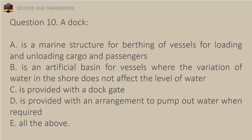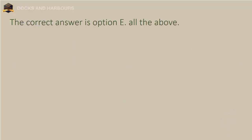Question 10. A dock: A. Is a marine structure for berthing of vessels for loading and unloading cargo and passengers. B. Is an artificial basin for vessels where the variation of water in the shore does not affect the level of water. C. Is provided with a dock gate. D. Is provided with an arrangement to pump out water when required. E. All of the above. The correct answer is Option E: All of the above.